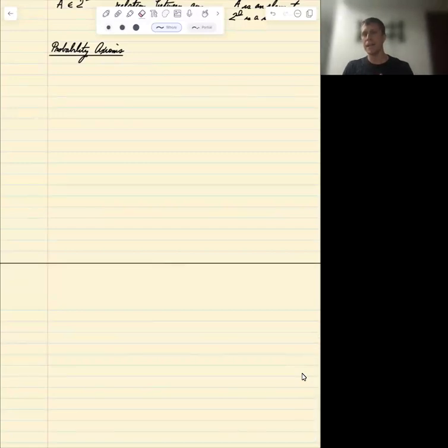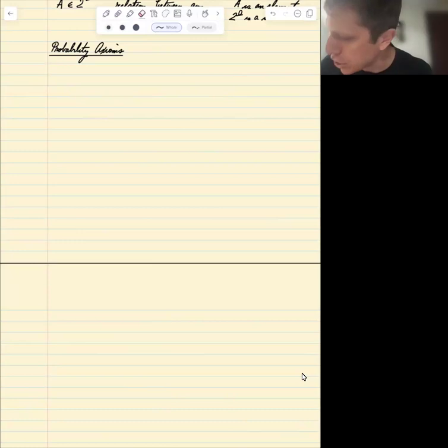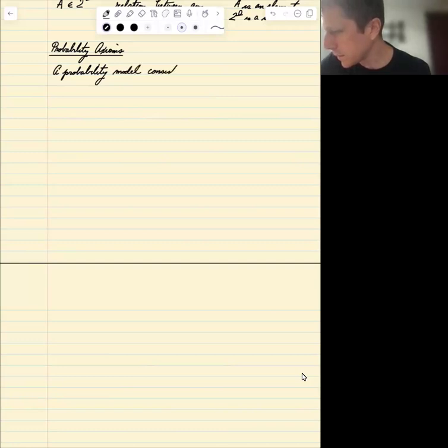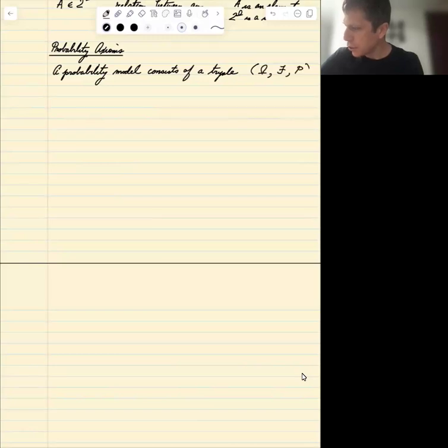Let's formalize this into the probability axioms. The first axioms concern the set of events that we're talking about. So a probability model consists of a triple. We have to specify three things to have a probability model. The triple is omega, F, P - script F, capital P.